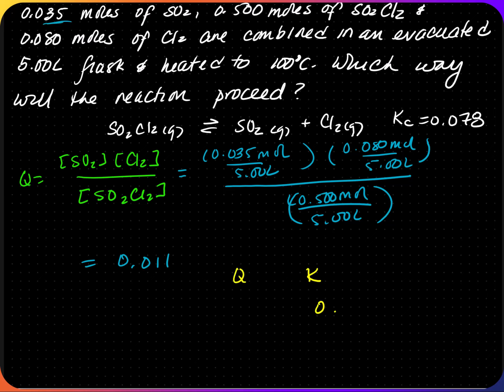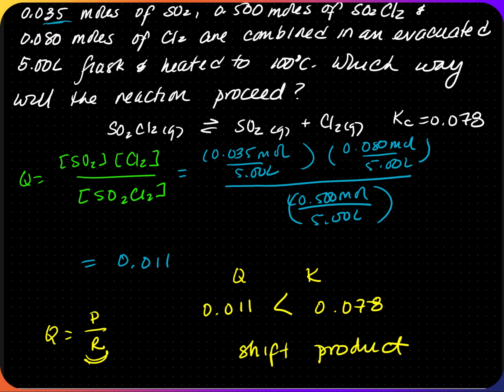Comparing Q to K: K was given as 0.078, and Q is 0.011. Since Q is less than K, we have more reactants. Therefore, the reaction must shift towards the products to reach equilibrium.